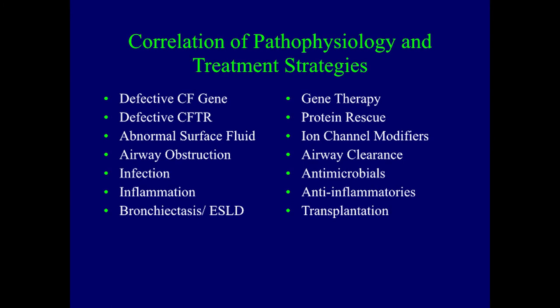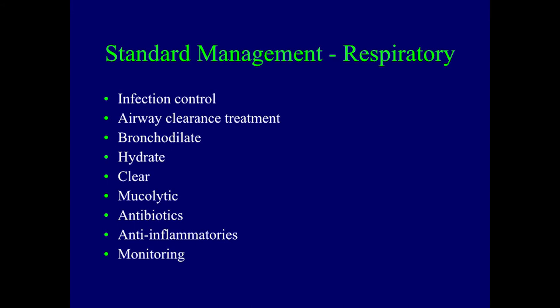For standard respiratory management: infection control is a major point for everybody who has CF and CF families. We want airway clearance treatment. We're often bronchodilating with albuterol. We may be hydrating the airway surface using hypertonic saline to clear that mucus, and applying vests or airway vibratory positive pressure devices. We might use a mucolytic — something to help break apart the coiled springy DNA.